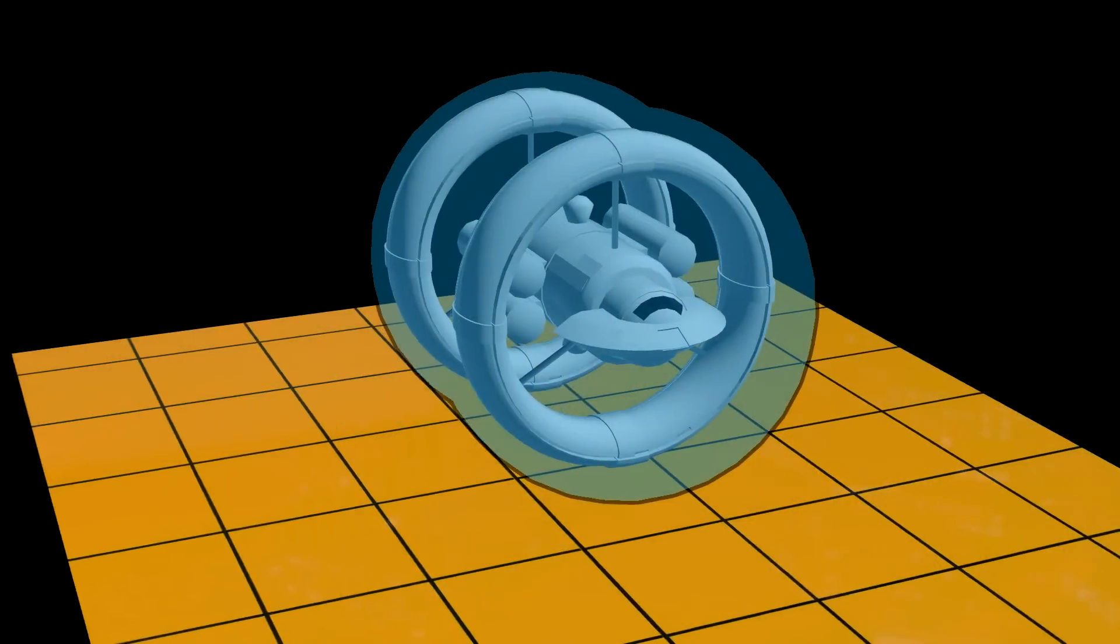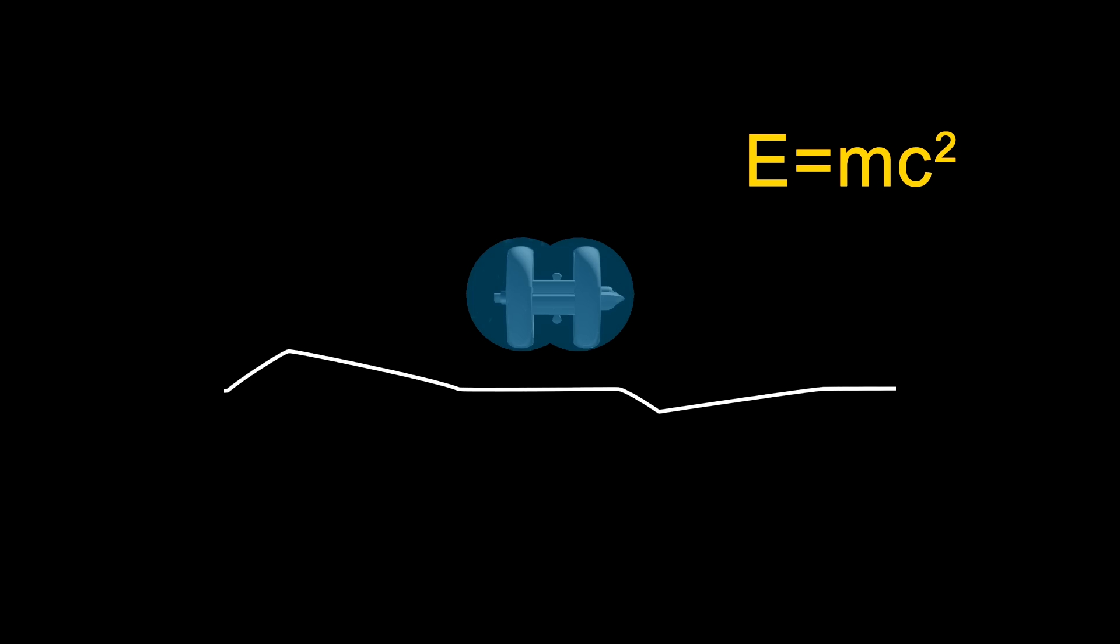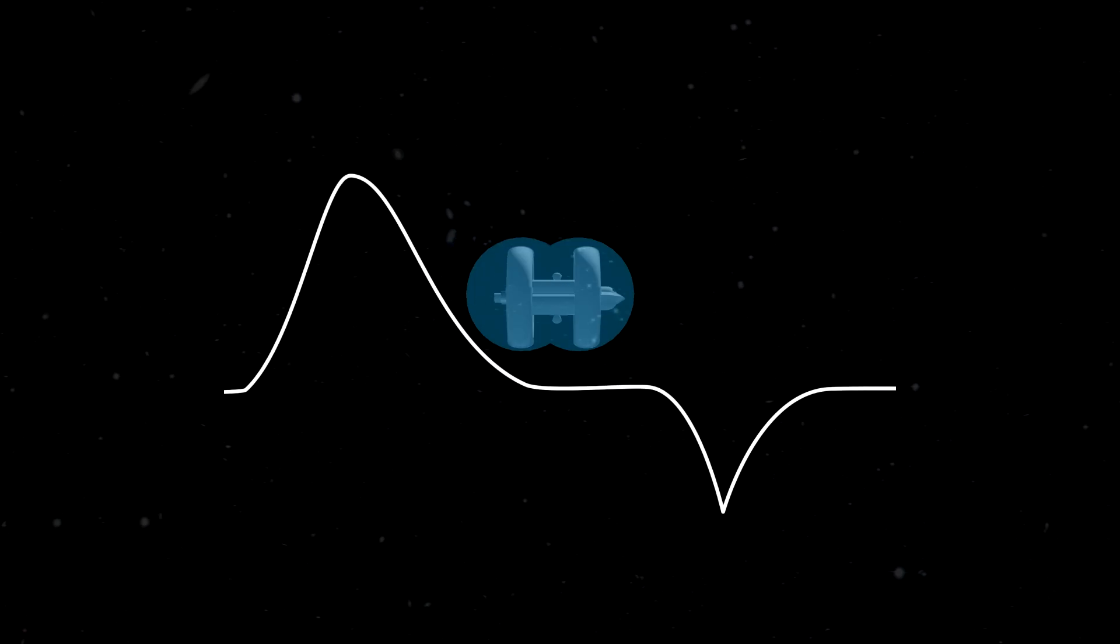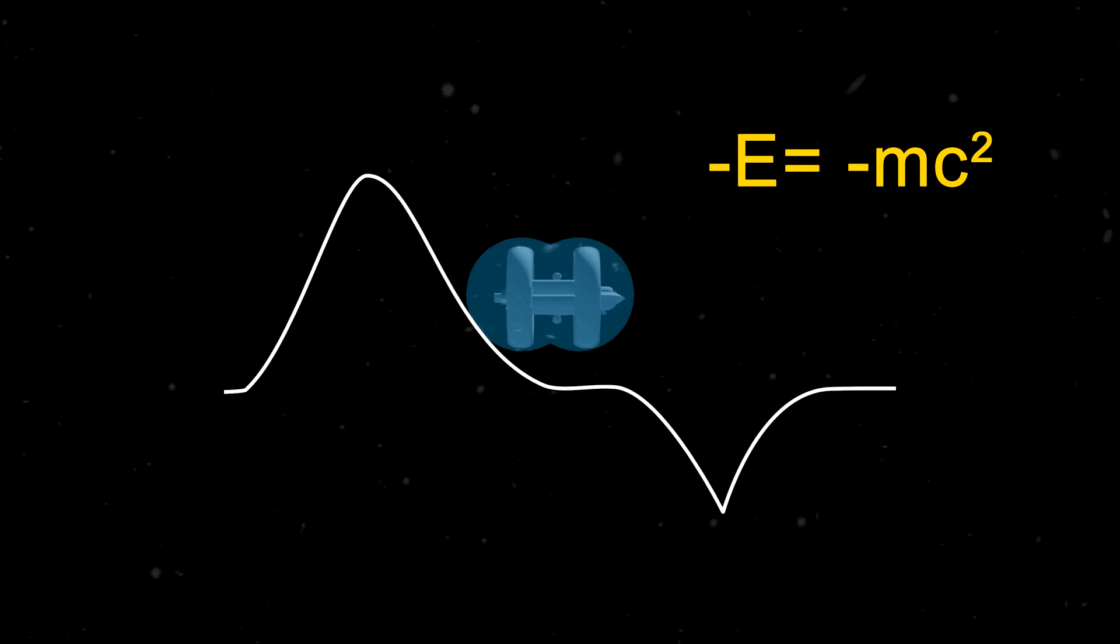So how would a warp engine make space contract in front and expand in the back? This is not easy. Space is a fairly stiff fabric on the order of this equation. C is the speed of light to the fourth power, so this is a very large number. And to make space warp locally around a spaceship like this requires a lot of mass, or its energy equivalent via E equals MC squared, densely concentrated around the spaceship. And more importantly, this is not just regular mass or regular energy. This is negative mass and negative energy.